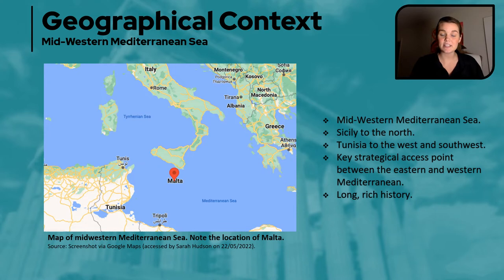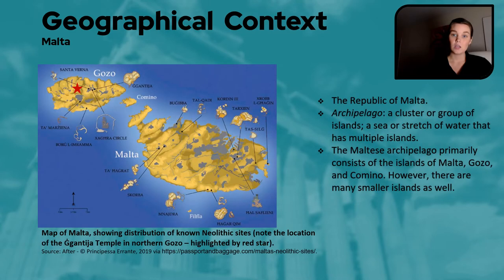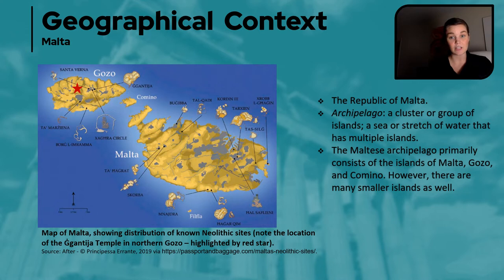Malta itself is located in the mid-western Mediterranean Sea, in the strait between the southern part of Italy — that being the island of Sicily — and the northern tip of Tunisia in northern Africa. This places it at a strategic point of access between the eastern and the western Mediterranean Sea, giving the island a very long and very rich history. The modern Republic of Malta consists of three main islands: Gozo, Comino, and of course Malta, making it geographically what's known as an archipelago — a cluster of islands containing multiple islands.